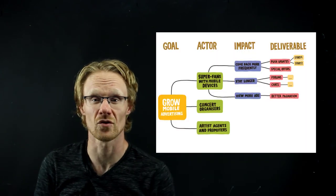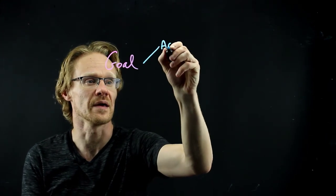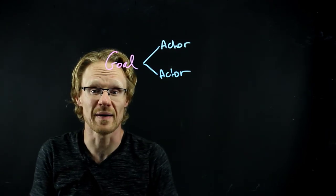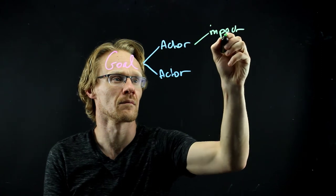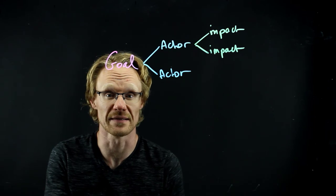There are lots of examples along the way, like this one about growing mobile advertisement, or this one about a game trying to reach 1 million players. In summary, an impact map is simply a mind map that links the business goal with the different actors you may have, then the impact on those actors, and finally the deliverables that you're thinking of implementing.